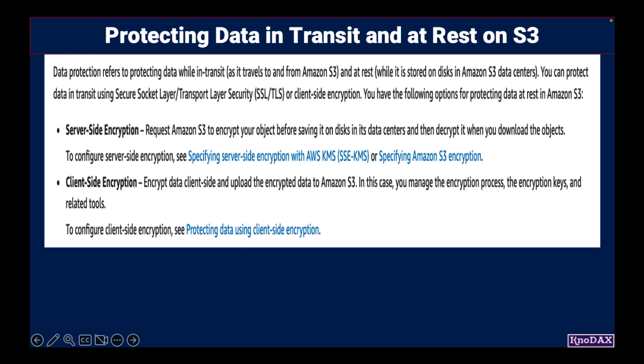Data protection refers to protecting data while in transit — meaning protecting data as it travels to and from Amazon S3. Data protection also refers to protecting data at rest — meaning protecting data while it is stored on AWS data centers. You can protect data in transit and at rest on S3.